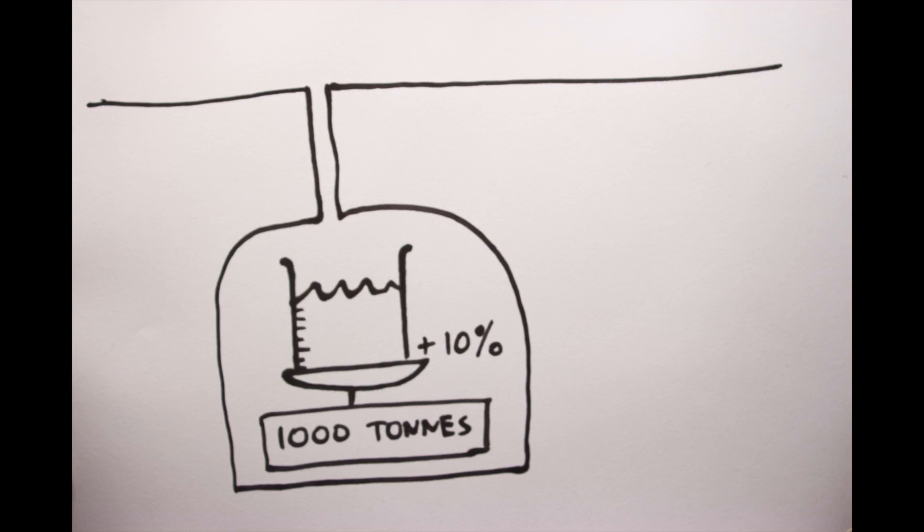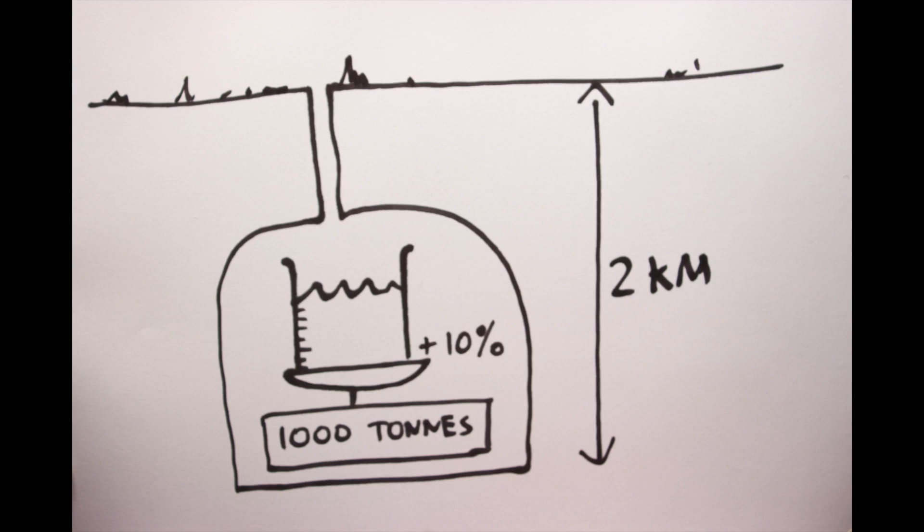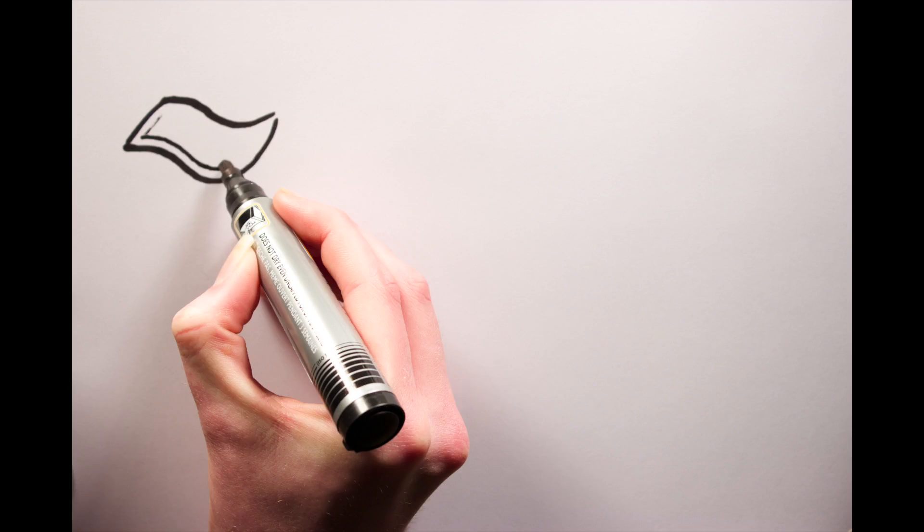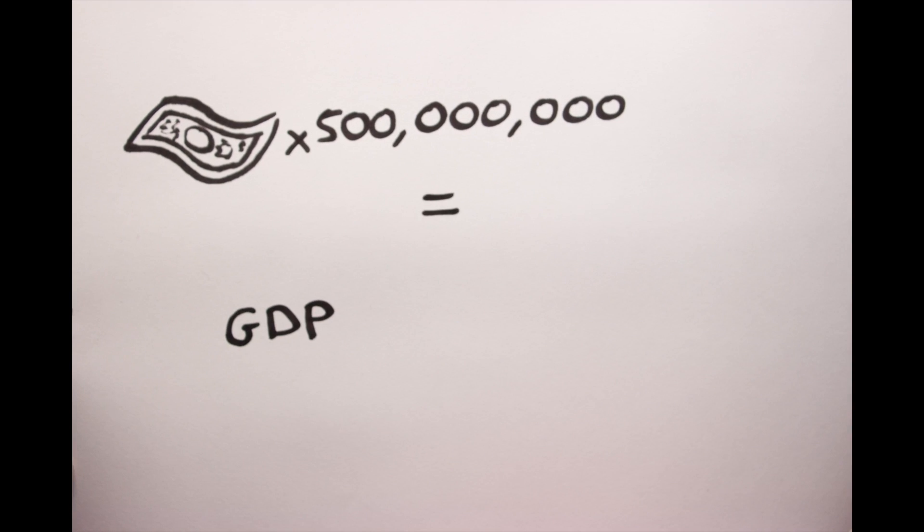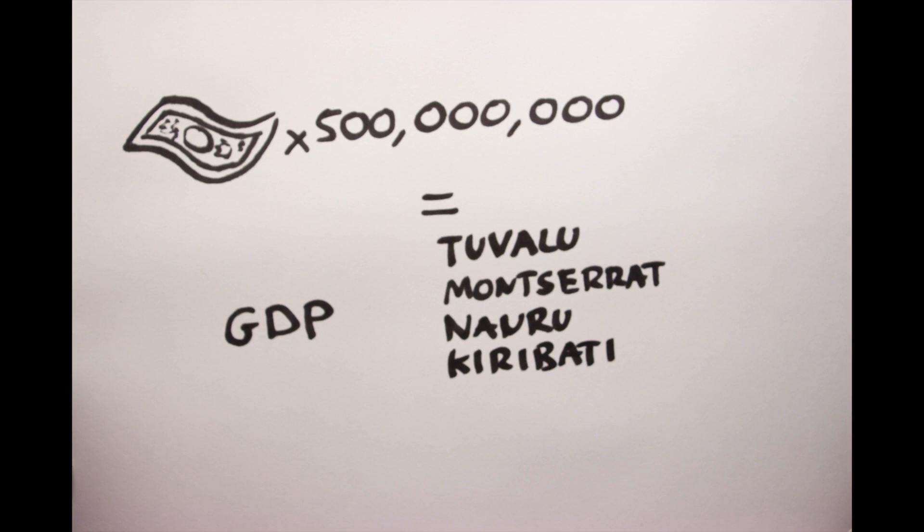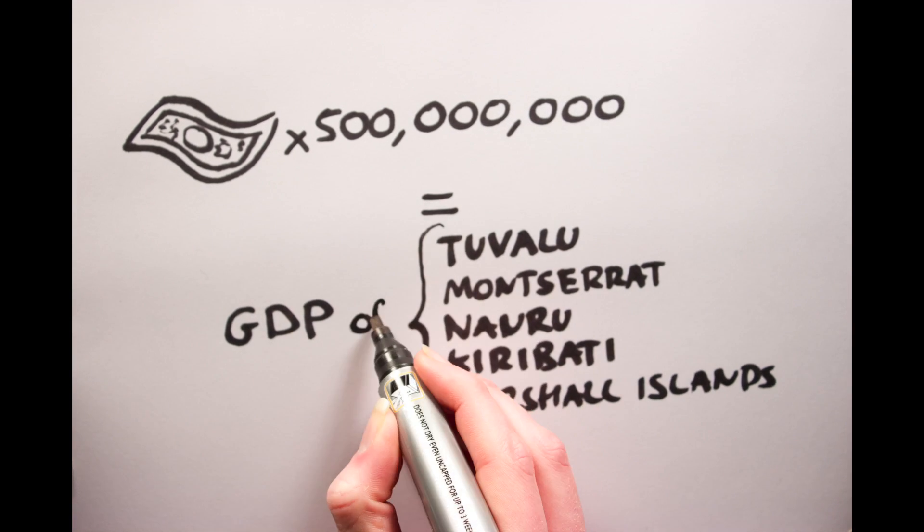The Sudbury Neutrino Observatory used a thousand tons of heavy water stored over 2km underground in a mine to build a neutrino detector. If the observatory were to have purchased heavy water at its current market price, it would have set them back just over half a billion US dollars, or in other words, the total GDP of Tuvalu, Montserrat, Nauru, Kiribati and the Marshall Islands combined.